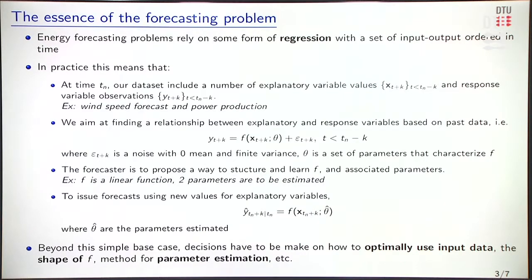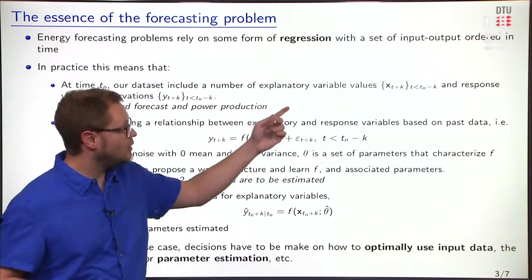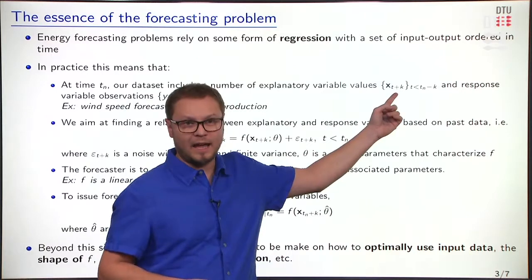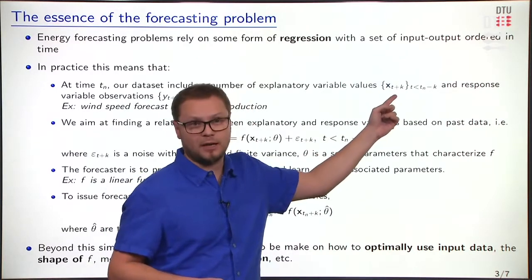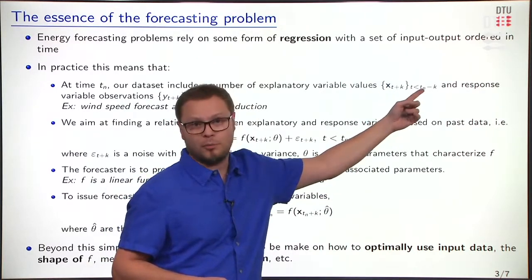In practice, all our energy forecasting problems rely on some form of regression with a set of inputs and outputs that are ordered in time. So for each and every time in the past, before the time t of interest, we have measurements for inputs that are explanatory variables, which we denote by x. And we have this set of explanatory variable values for the past,